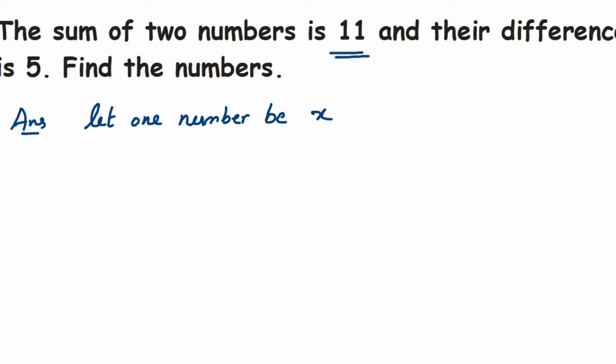So if I add these two numbers I should be getting 11. One number we have assumed is x, the other number we have to find out, so this is a question mark which we have to find out. So I'm going to transpose x to the other side, so other number will be equal to 11 minus x.